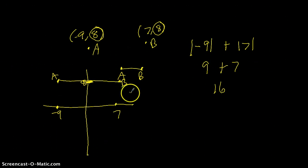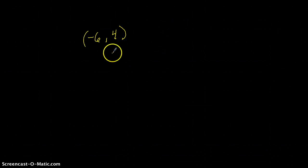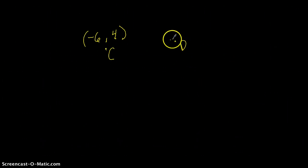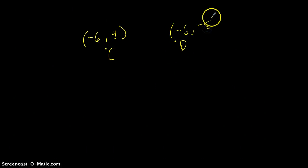Now let's say we have coordinates for another line segment. Point C is located at negative 6 and positive 4, and point D is located at negative 6, negative 5.